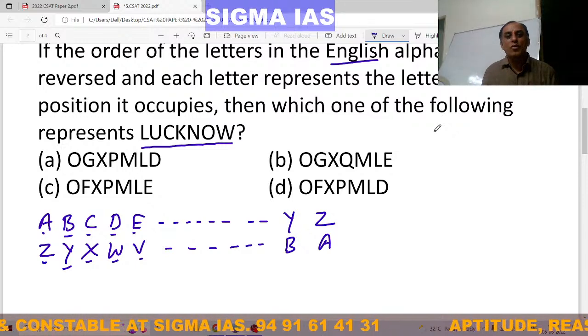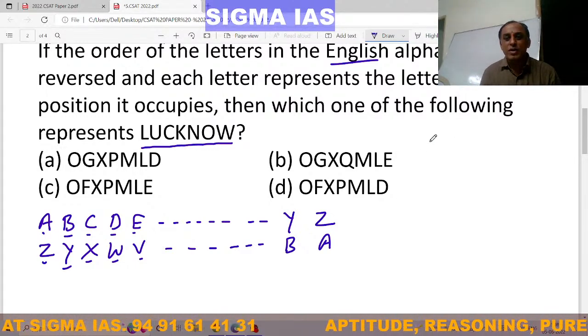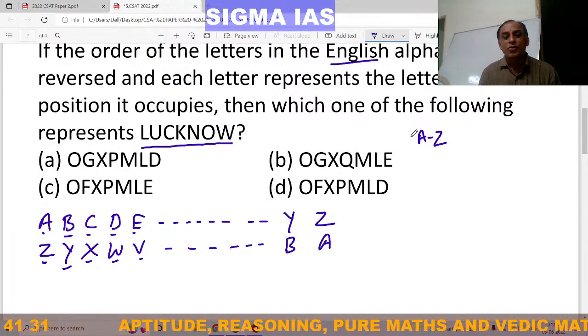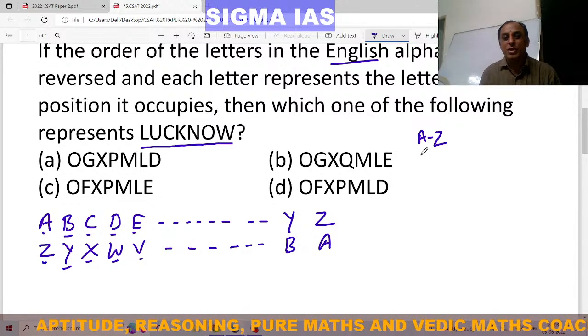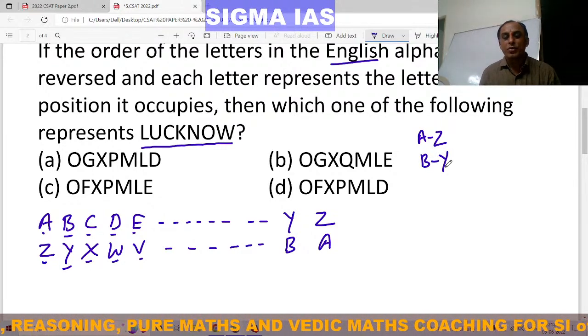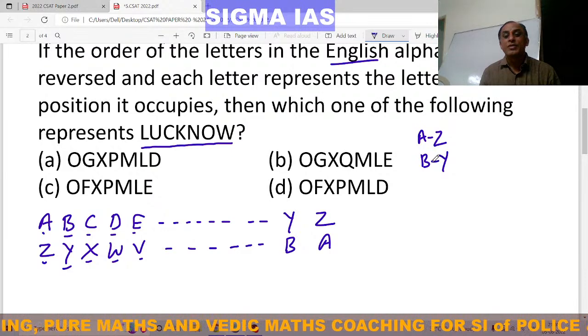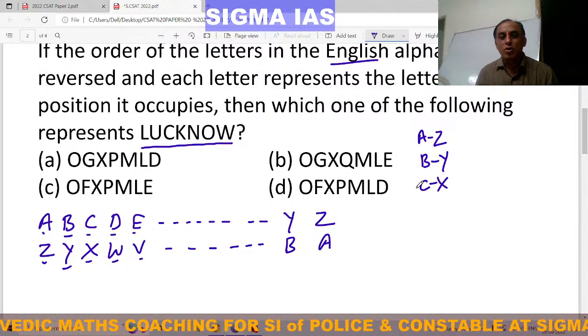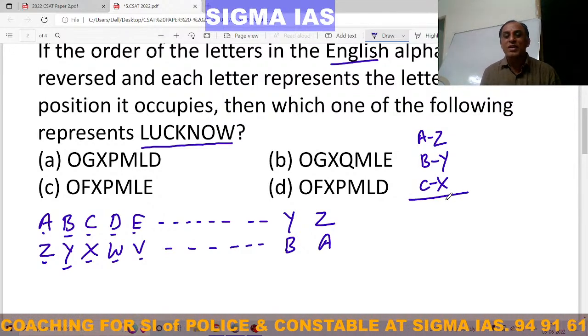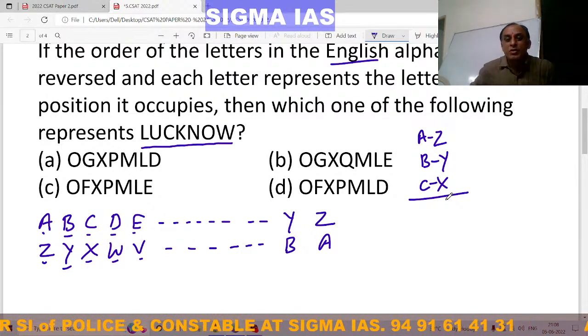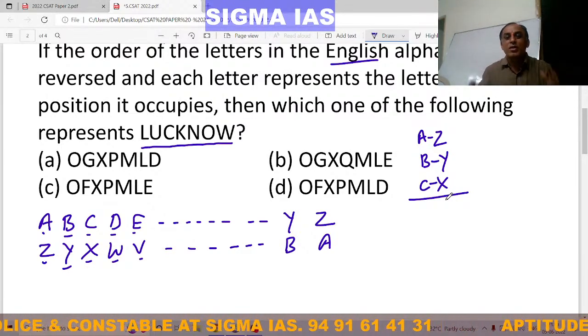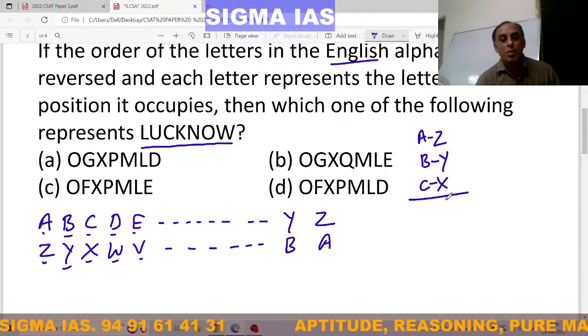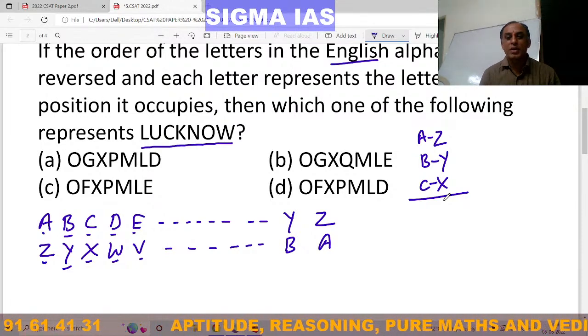So if you know the alphabet's reverse position letter, then it is very easy. A is the first letter. Its reverse position letter is first letter, that is Z. B is the second letter. Its reverse position letter is second letter from last, that is Y. C is the third letter. The third letter from last is X. These all are very easy for each and every person because these are starting and ending letters. Then how to remember the remaining letters?